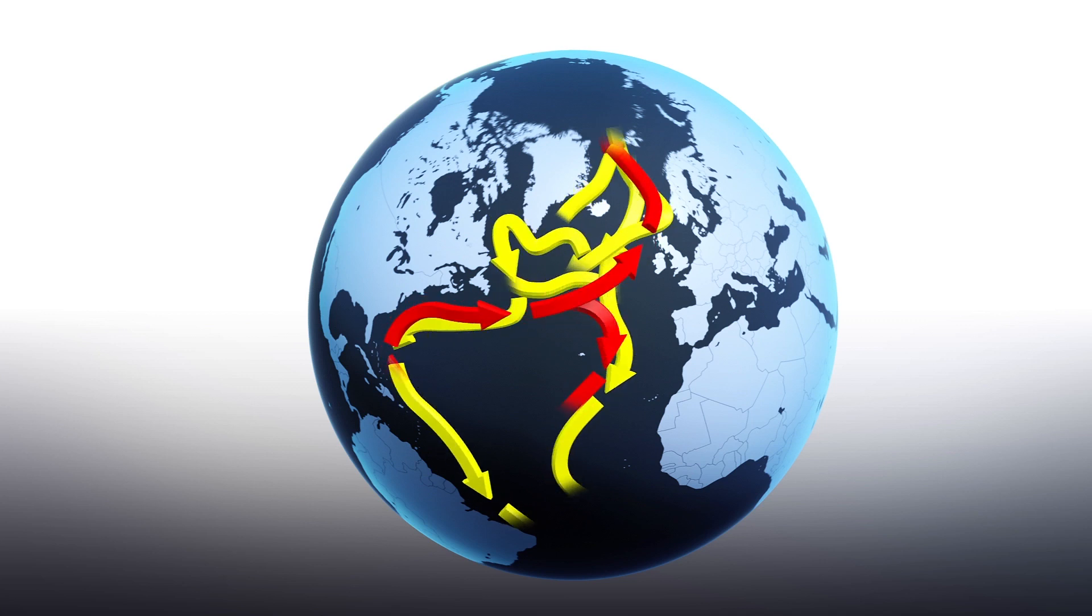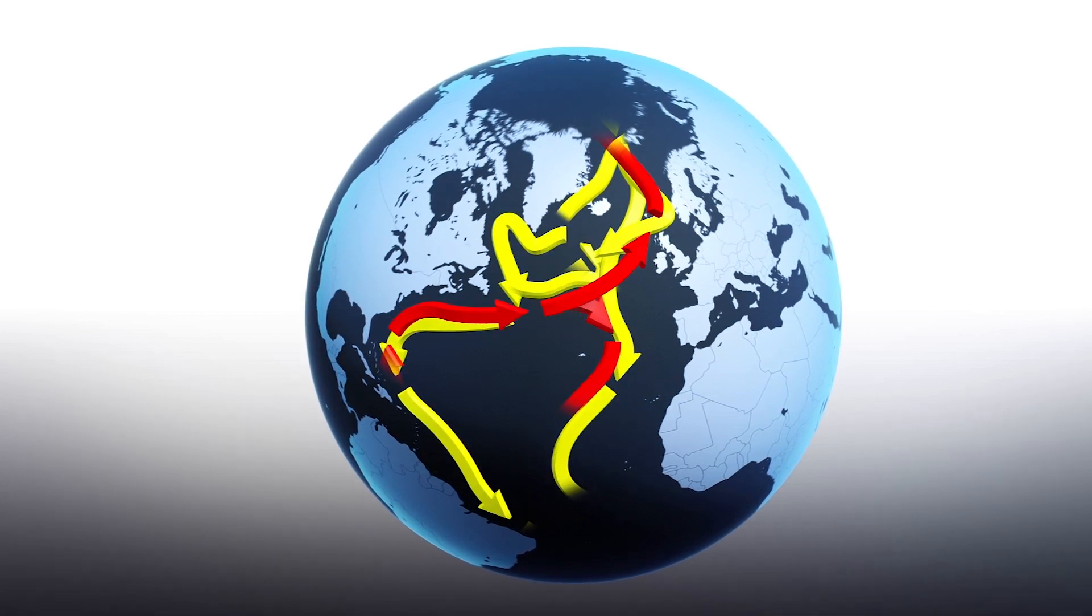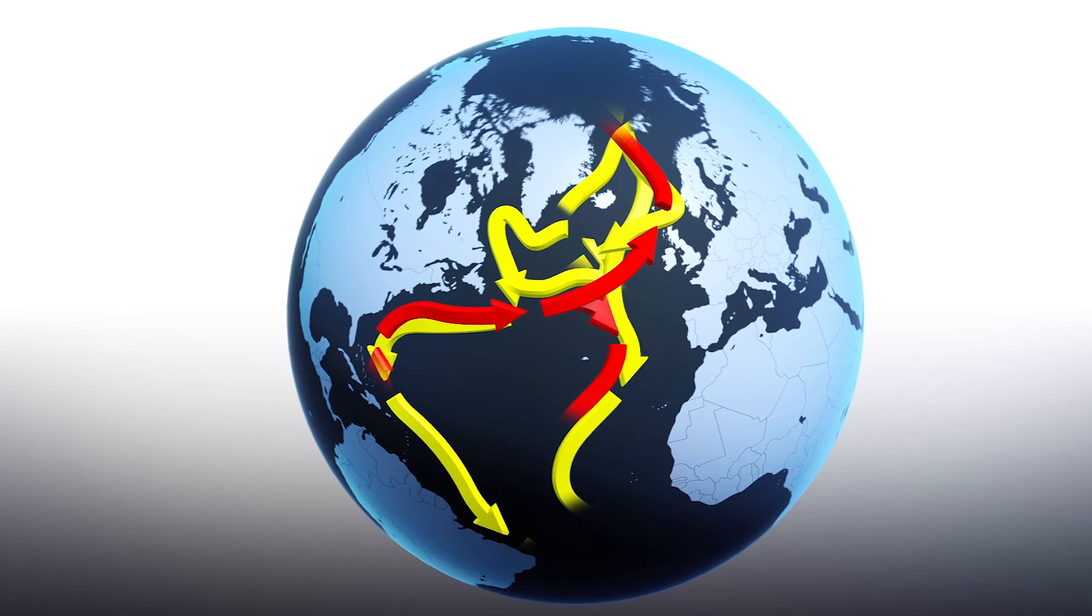This ocean water circulation affects global climate. More and more research suggests this conveyor belt system is slowing down, causing some scientists to fear its effects on climate change.